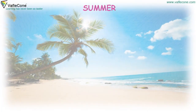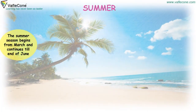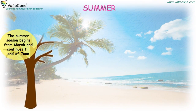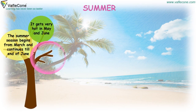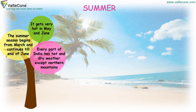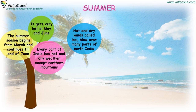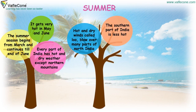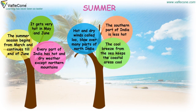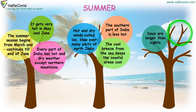Summer. The summer season begins from March and continues till the end of June. It gets very hot in May and June. Every part of India has hot and dry weather except the northern mountains. Hot and dry winds, called loo, blow over many parts of north India. The southern part of India is less hot. The cool breeze from the sea keeps the coastal areas cool. Days are longer than nights. Summer is the season of mangoes. Dust storms are common.